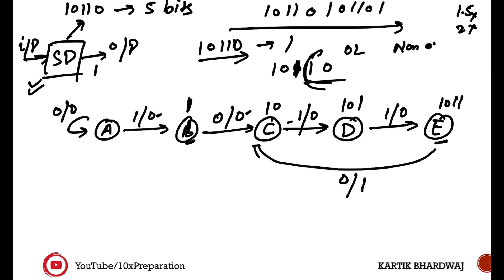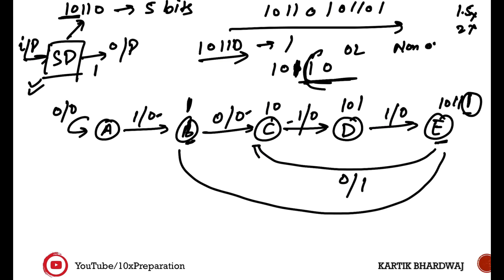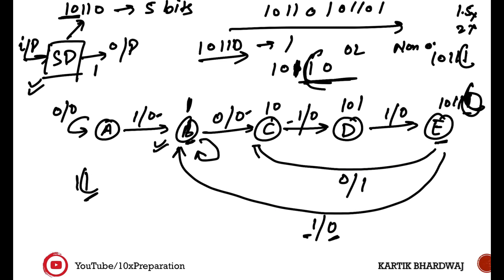In the overlapping case, after detecting the pattern, it jumps to state C because '10' from the end of the pattern can be the start of the next pattern. If a 1 is coming after detection, we jump back to state B, since we start counting from that bit only — the output is 0 and input is 1, reaching state B. Back at state A: if zero is there it remains at A; if one comes it moves to B.